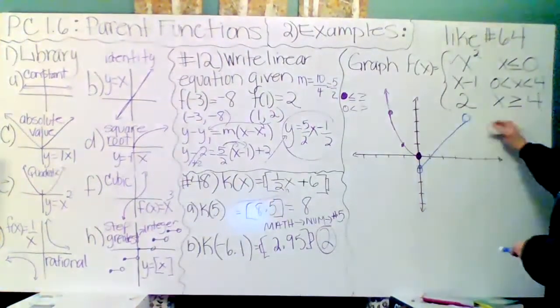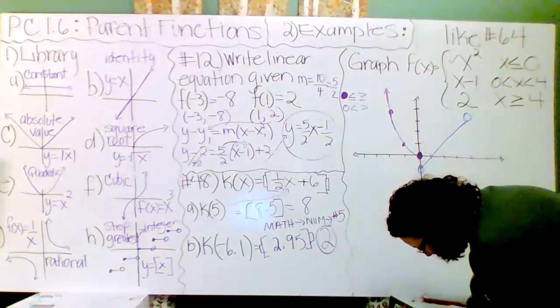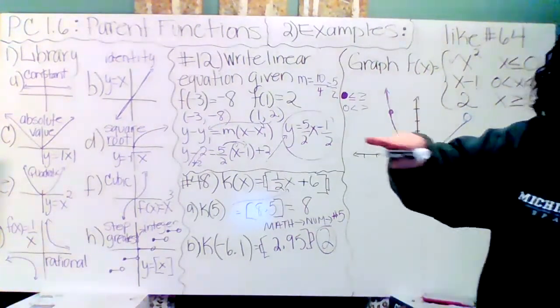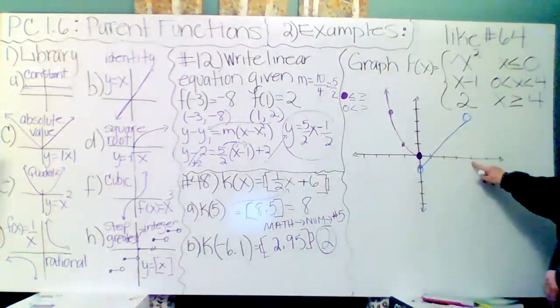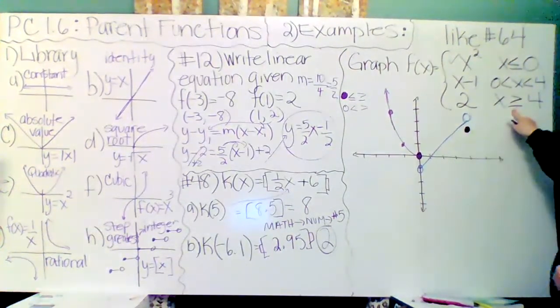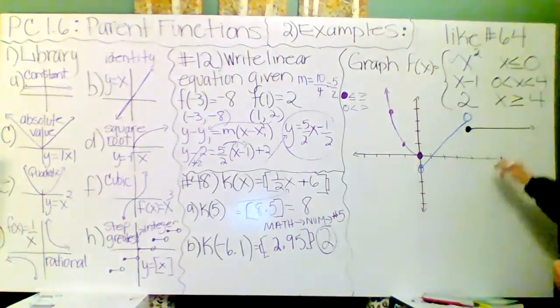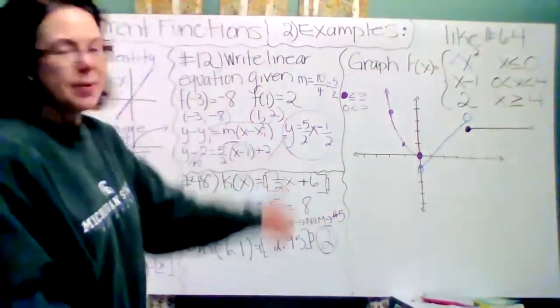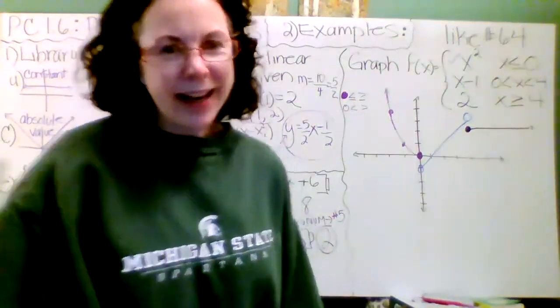Let's do the last line. This one is the easiest. The horizontal line y equals two starts where x equals four. It is a closed circle because of the equal sign here. And it's for all the x's greater than four. Five, six, and on and on. There we go. We have graphed a piecewise function. I hope you have a great night. Thanks for hanging out with me.